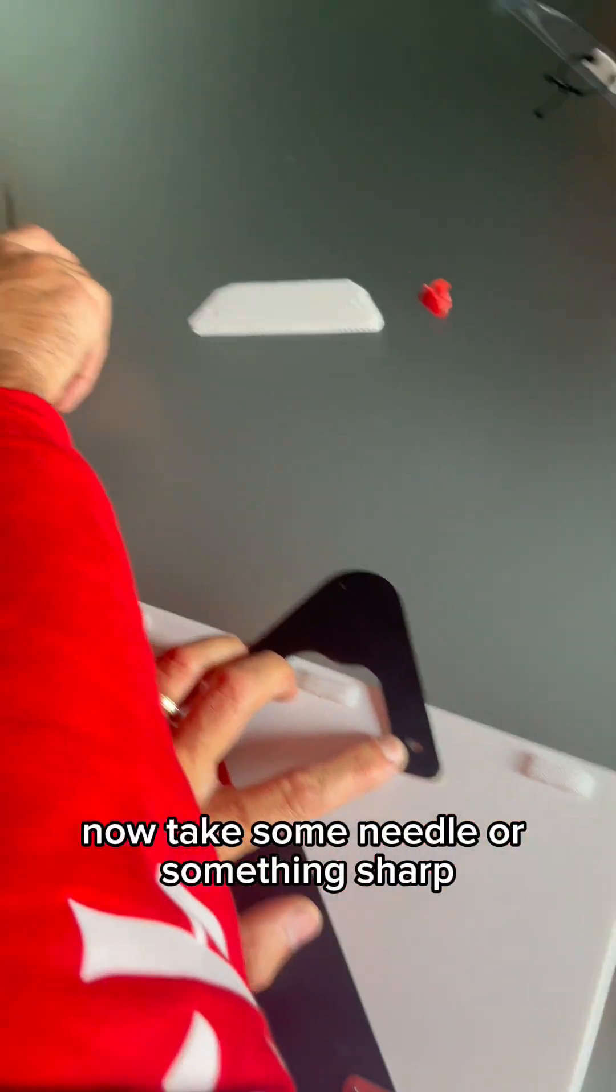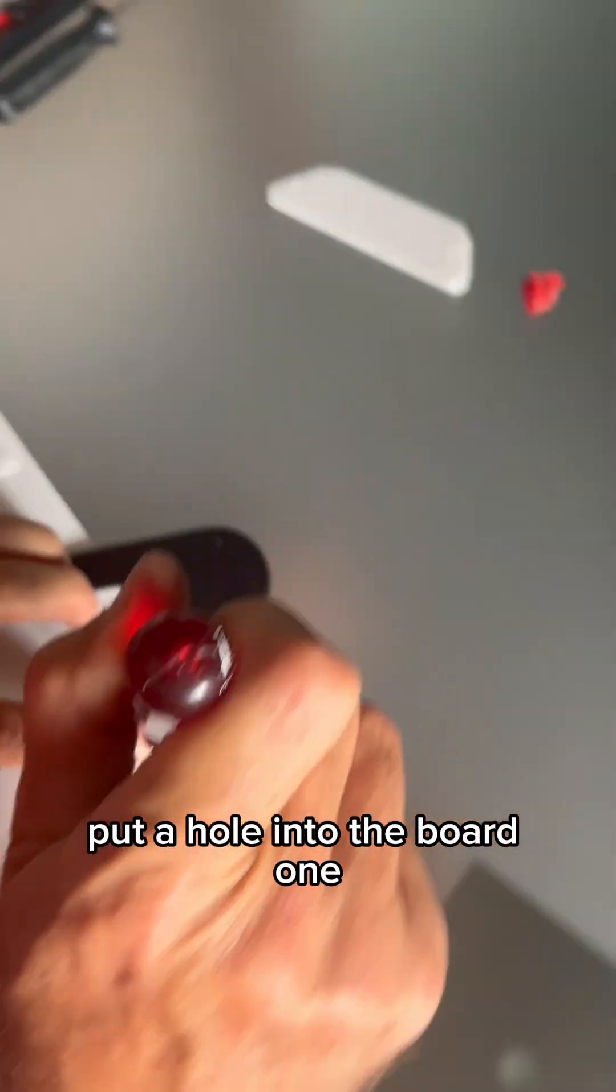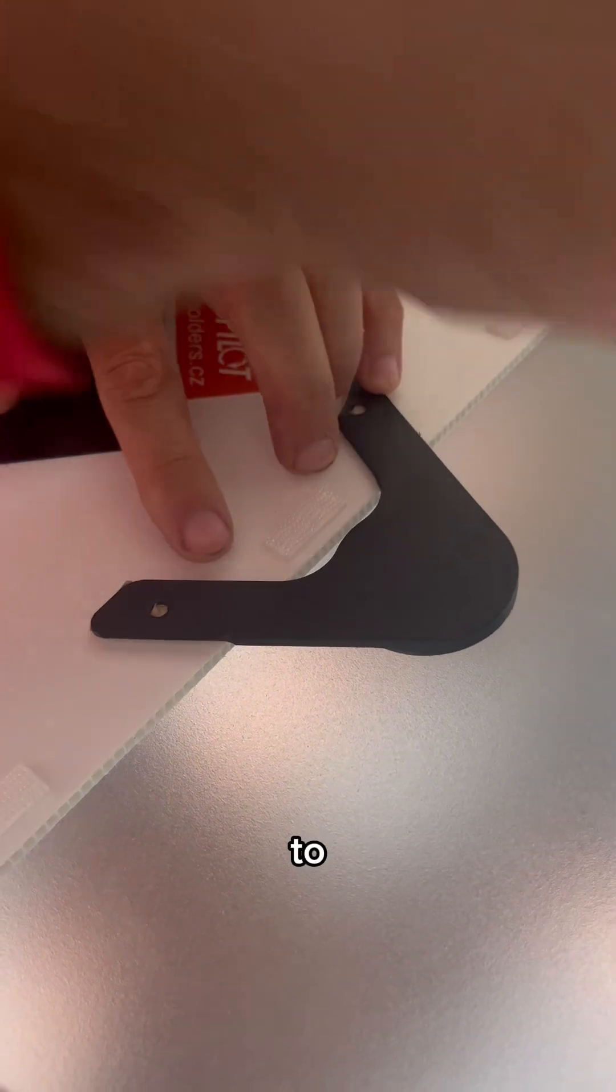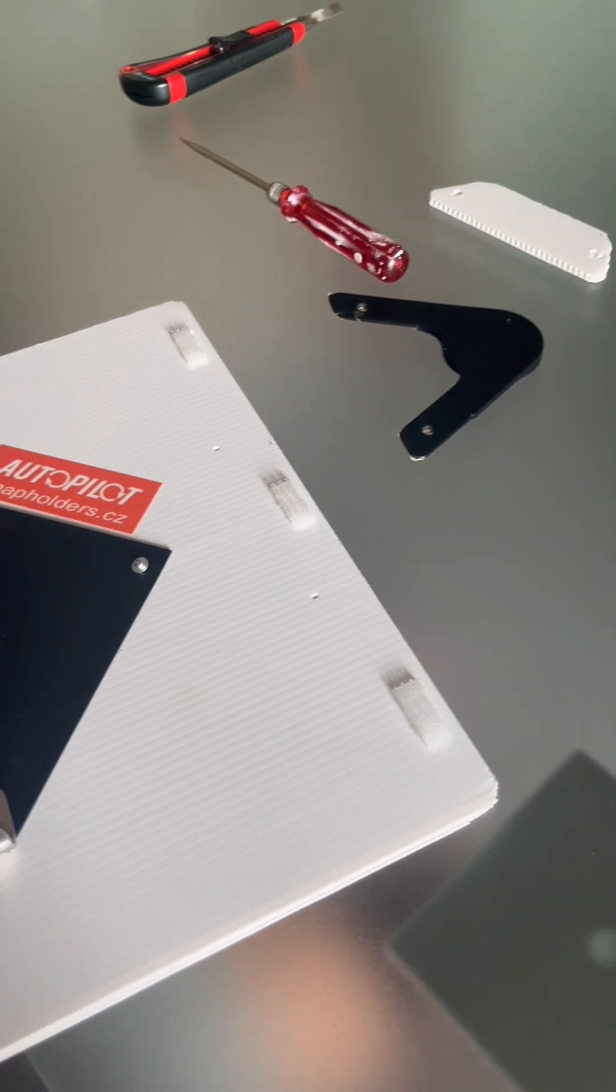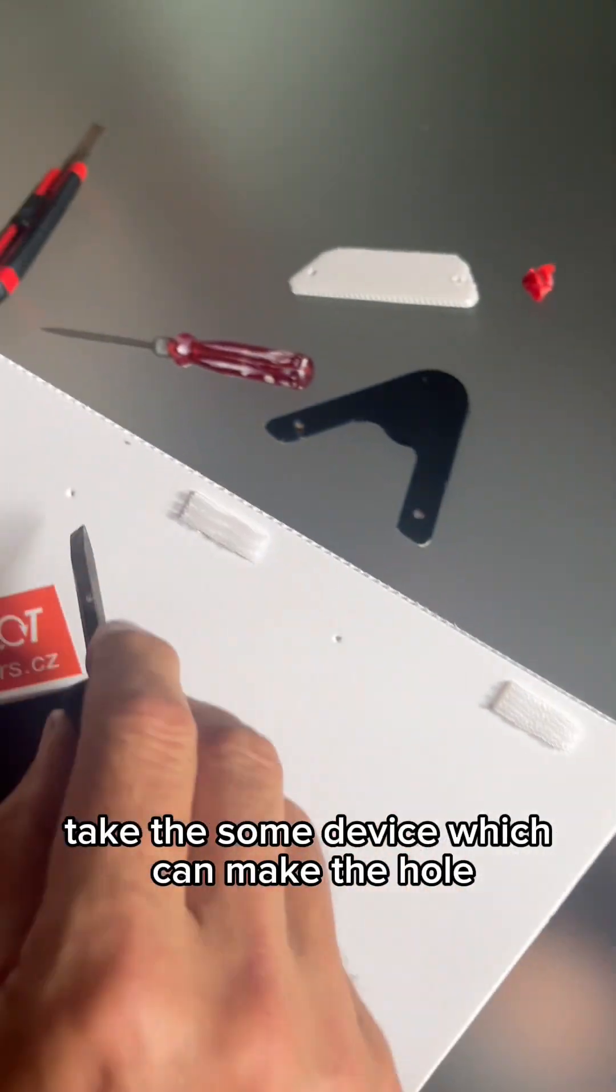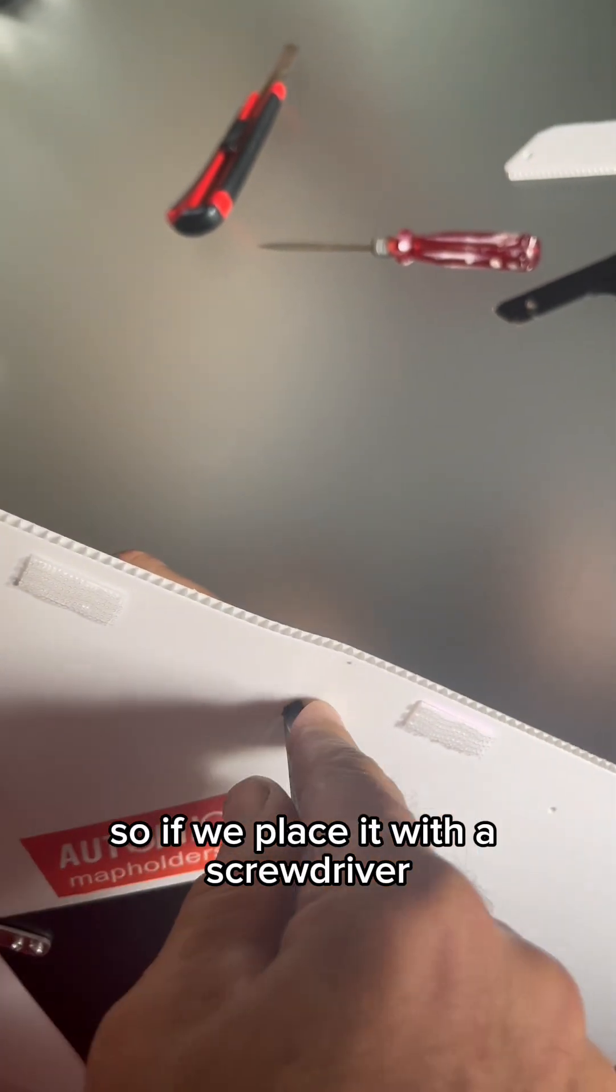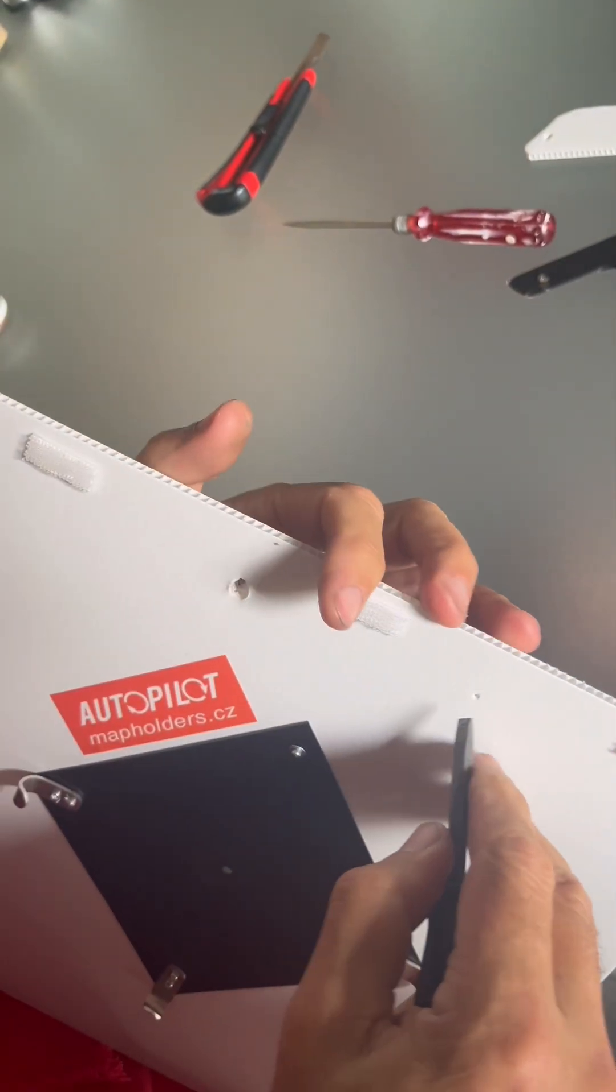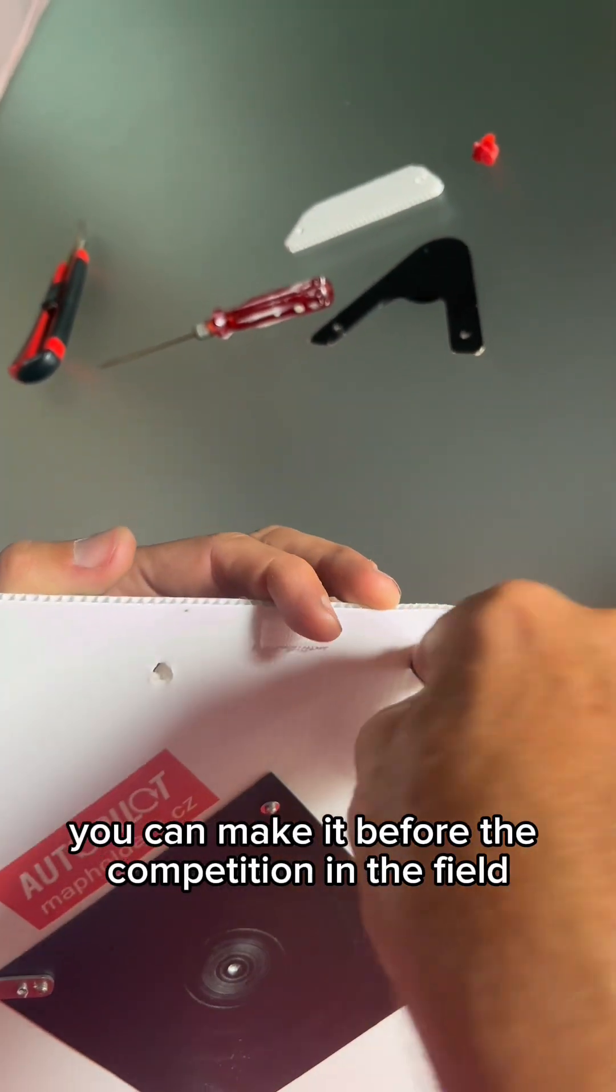Now take some needle or something sharp and put a hole into the board—one, two. Take some device which can make the hole. It's not necessary to be a drill, so you can use a screwdriver. You can make it before the competition in the field.